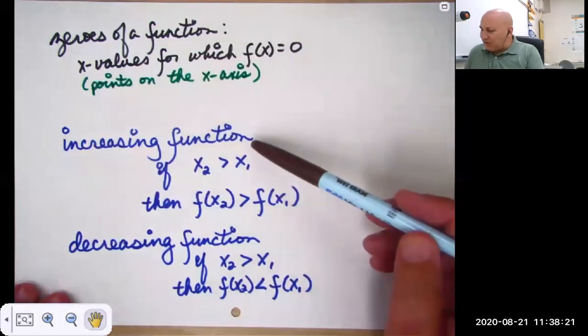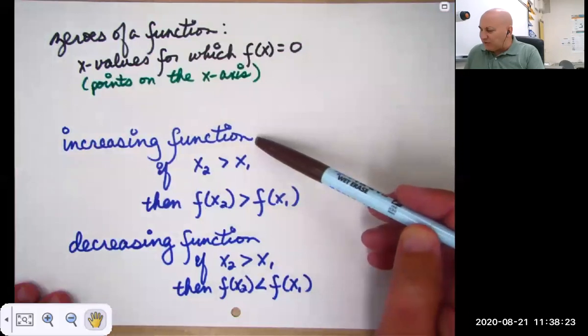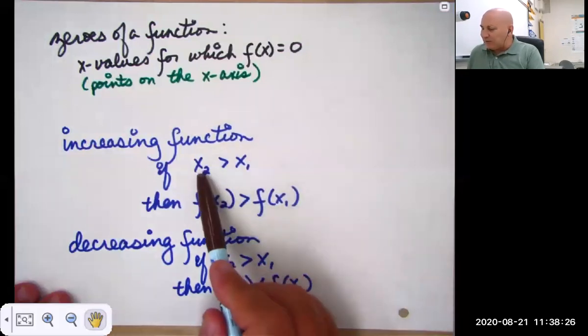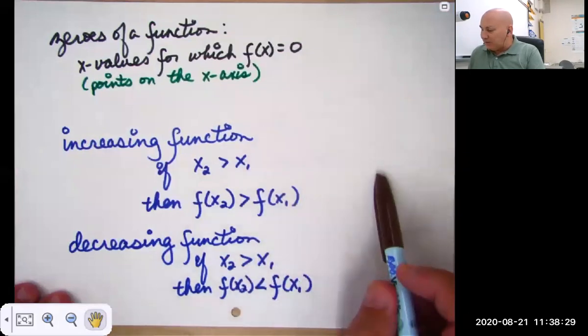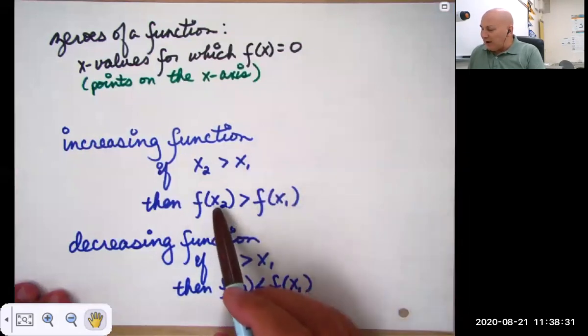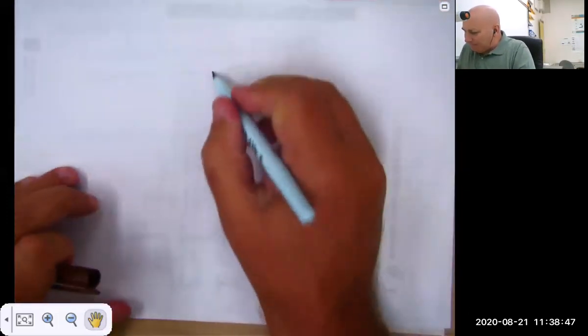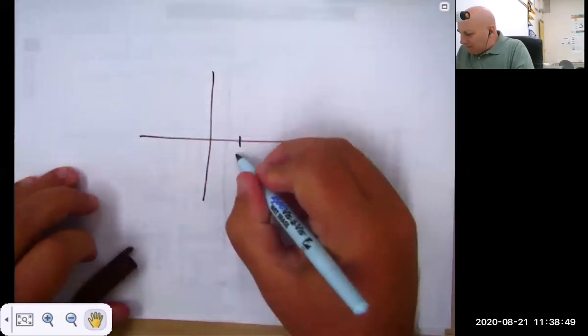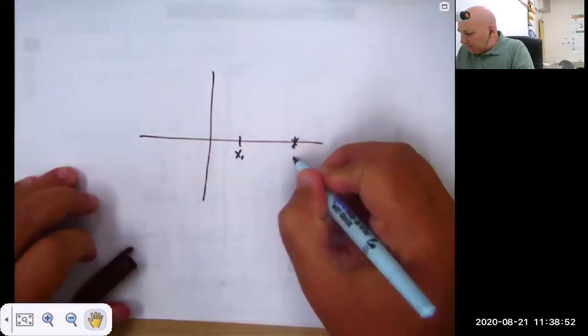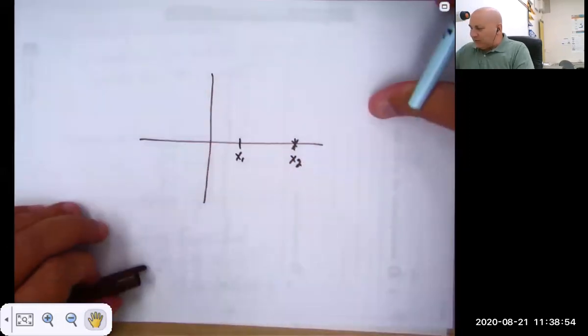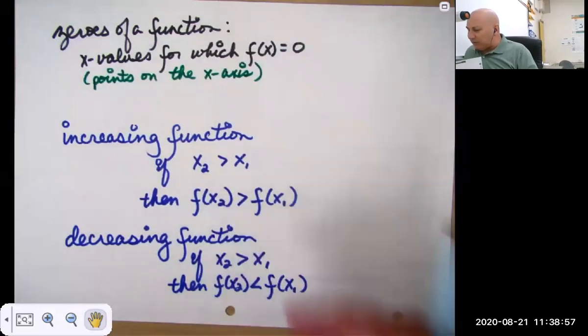So a function is called an increasing function if, let's say you have a point x2 which is bigger than x1, so it's to the right. Then the y value for x2 is greater than the y value for x1. That's a very cumbersome definition until you look at it on a graph.